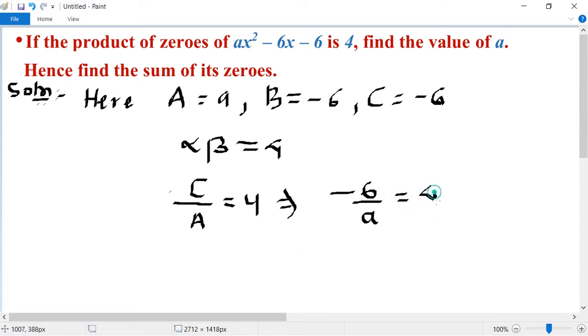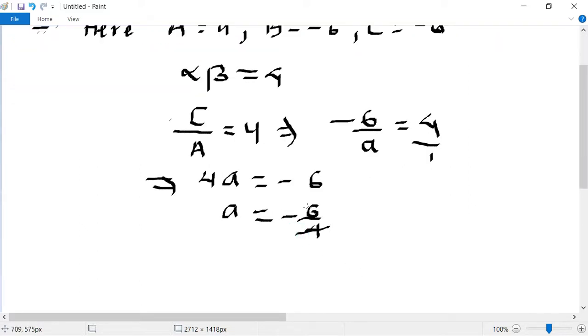Cross multiplication करेंगे, 6 को 4 से करेंगे, 4A equal to -6. 4 को 6 से cancel करेंगे, 3/2, 6/4, so a equal to -3/2.